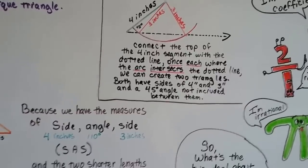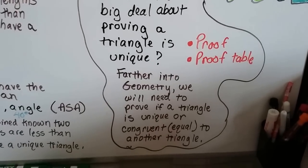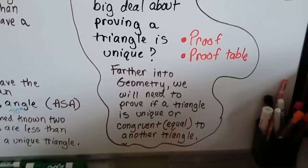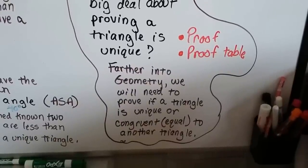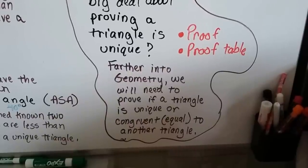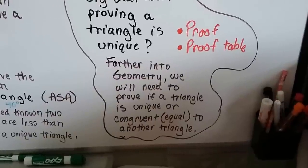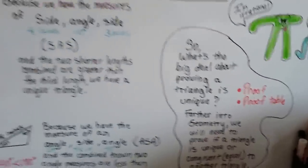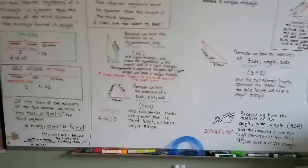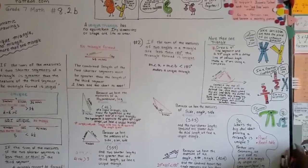Why does proving if a triangle is unique matter? Further into geometry, we'll need to make proof tables and prove if a triangle is unique or congruent — which is another word for equal to another triangle. We'll have to prove if two triangles are equal to each other, and that's what all this is about. I hope this was helpful and I'll see you next video.